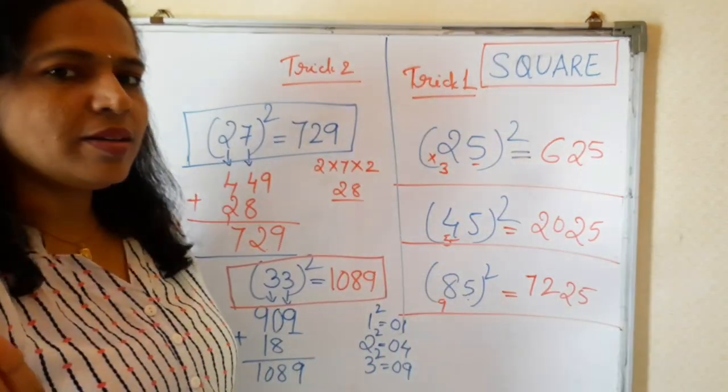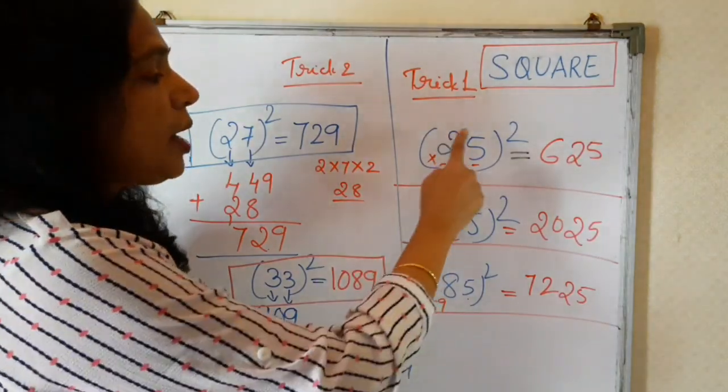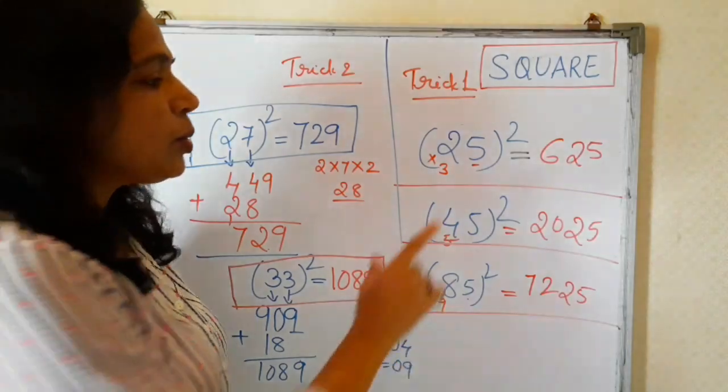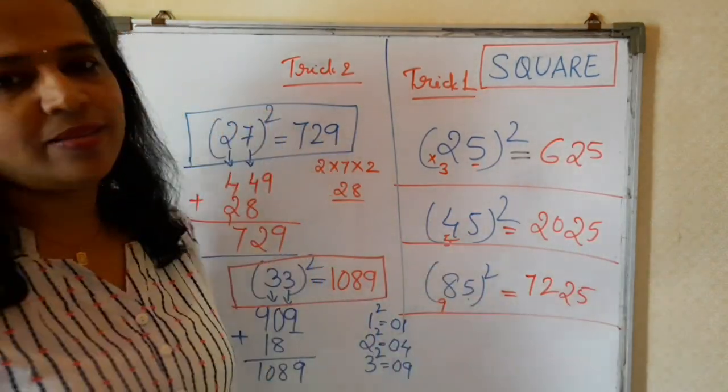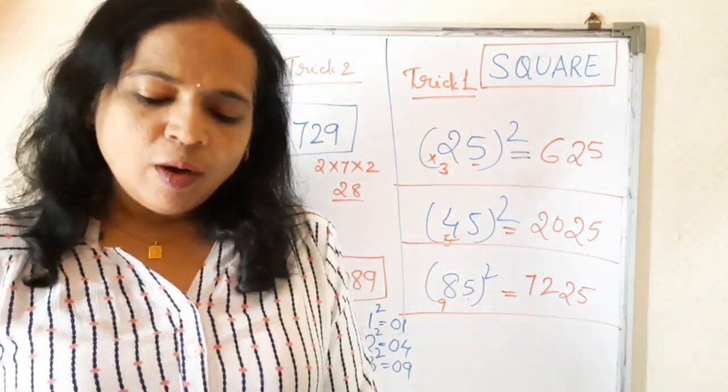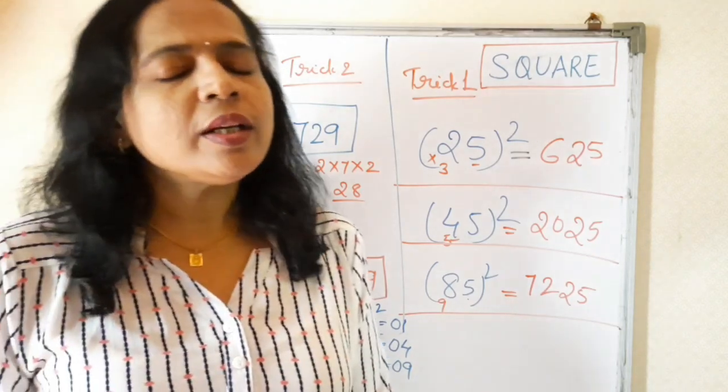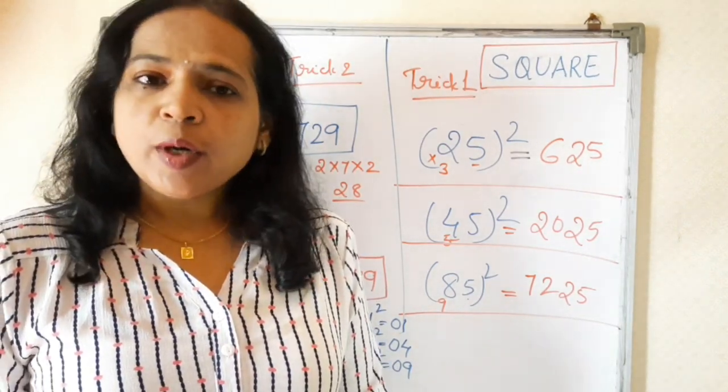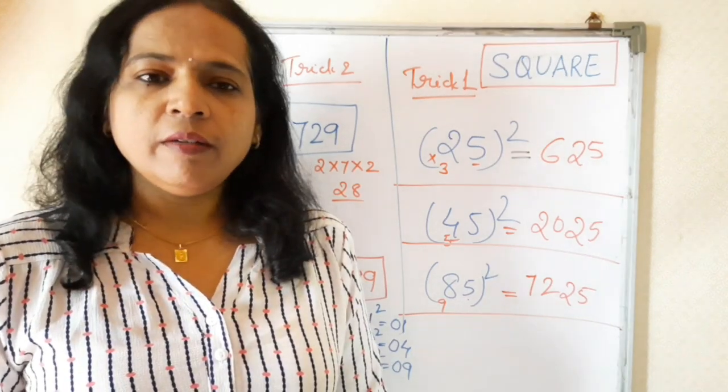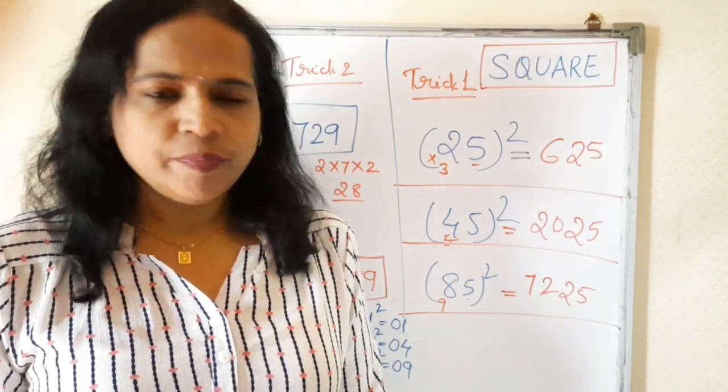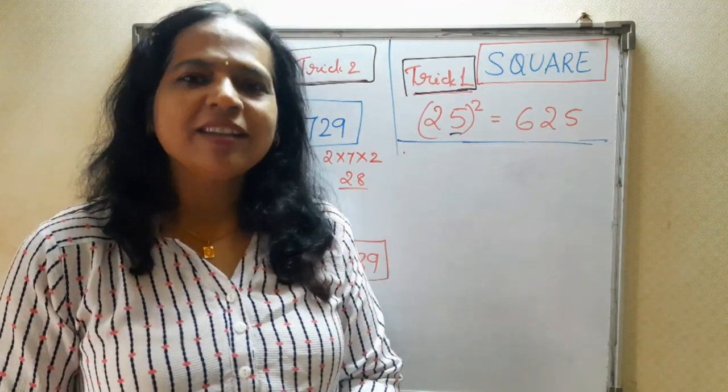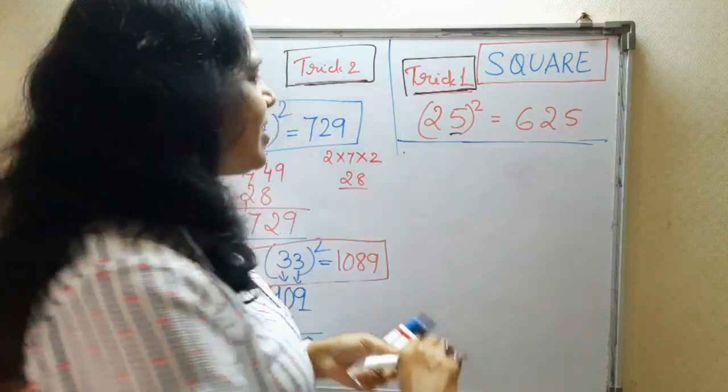Whenever you have in the unit place 5, you can say, always you can do this trick is faster than this. You know, always in mathematics, there are so many different ways of solving the problems. You can choose whichever one you are comfortable. Other than these 2 tricks, there is 1 more trick. Let us write this trick as trick 3.